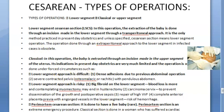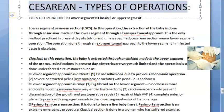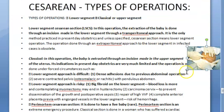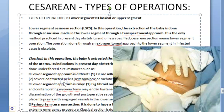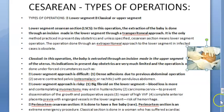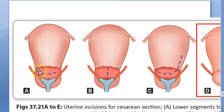In this video, let's look at the types of cesarean operations, basically based on the location where they make the incision. There are two types. The first is the lower segment cesarean section, where the lower segment of the uterus is cut — either a transverse cut, a vertical cut, or a J-shaped cut.